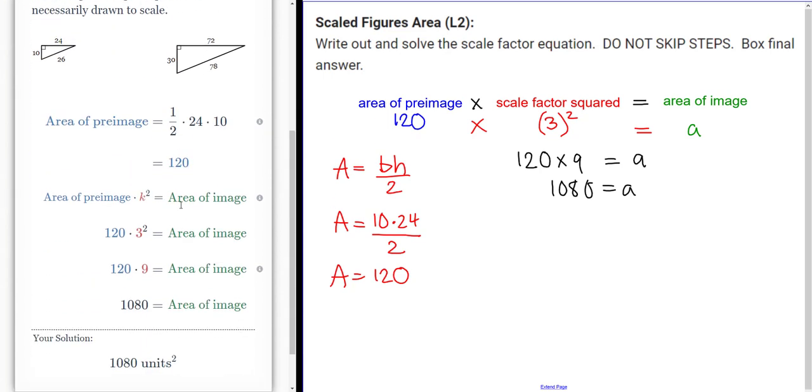There you go. So pretty much the same thing. In fact, their equation is identical to ours. Notice that their formula is 1 half base times height. I put BH over 2, however you want. But I guess we should box our final answer, though.